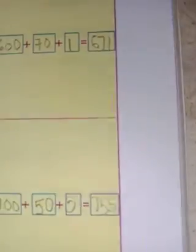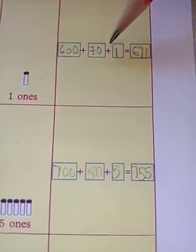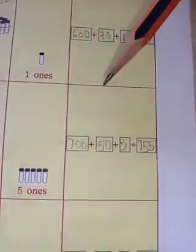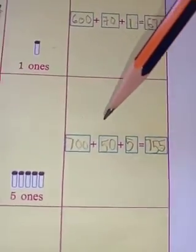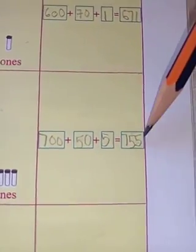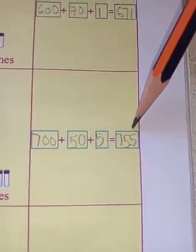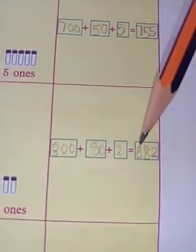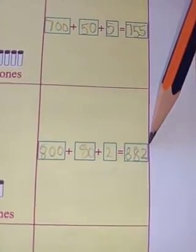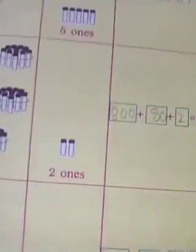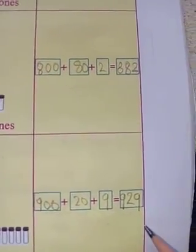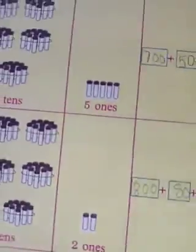Observe children here: 600 plus 70 plus 1 equals to 671. 700 plus 50 plus 5 equals to 755. 800 plus 80 plus 2 equals to 882. 900 plus 20 plus 9 equals to 929. Do you understand?